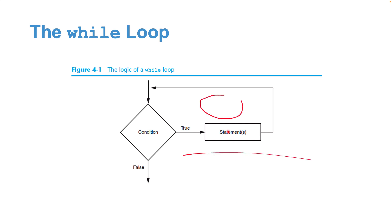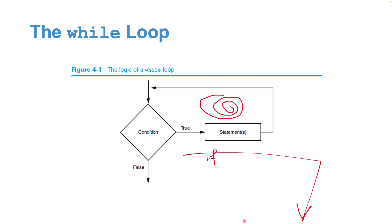It will then repeat and check the condition again, running the loop over and over. This is different from the way an if statement works. In an if statement, we check the condition — if true we do some statements and then exit; if false we may do something or nothing and then exit. The key difference with while is that it repeats that process over and over again.